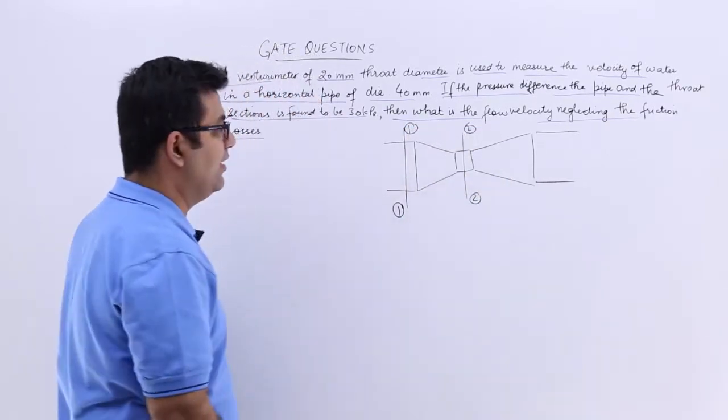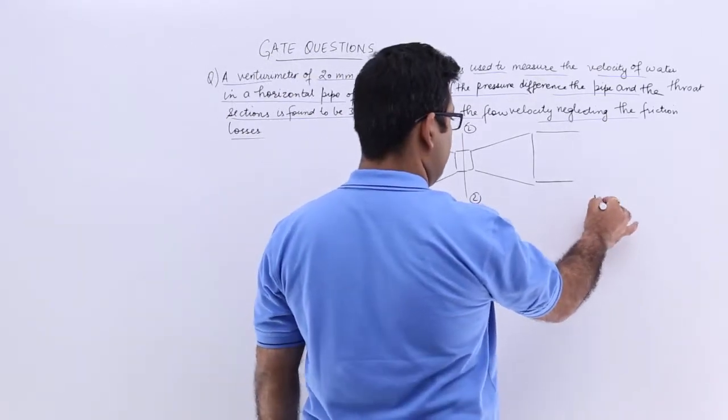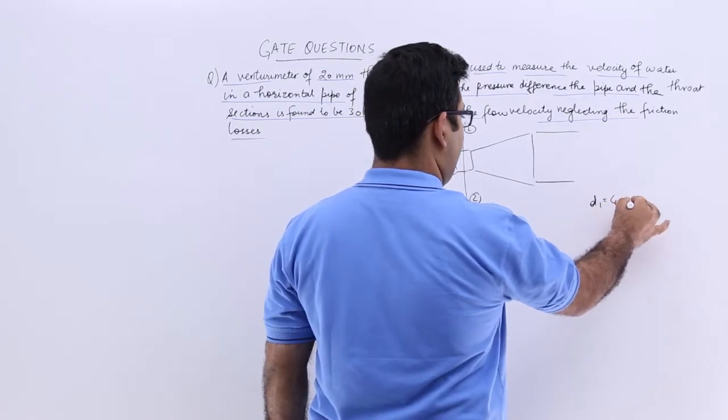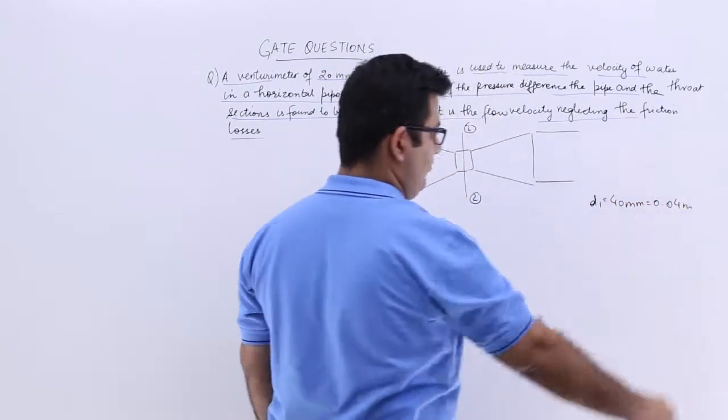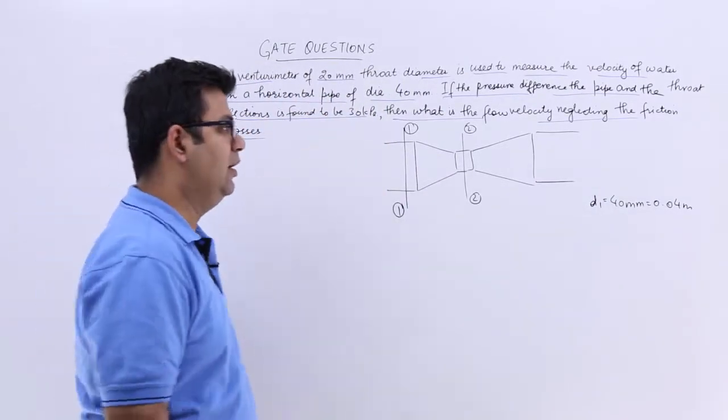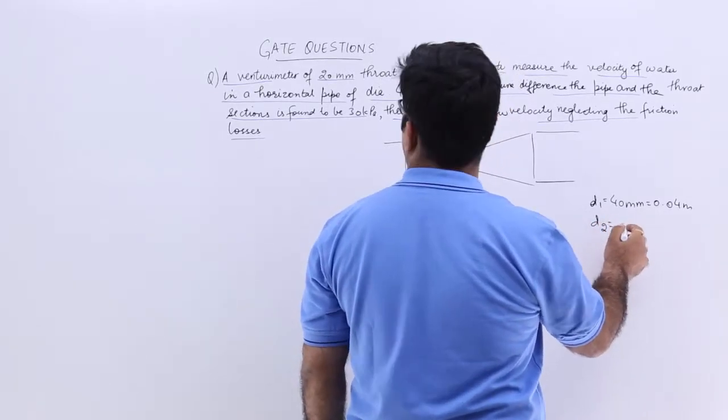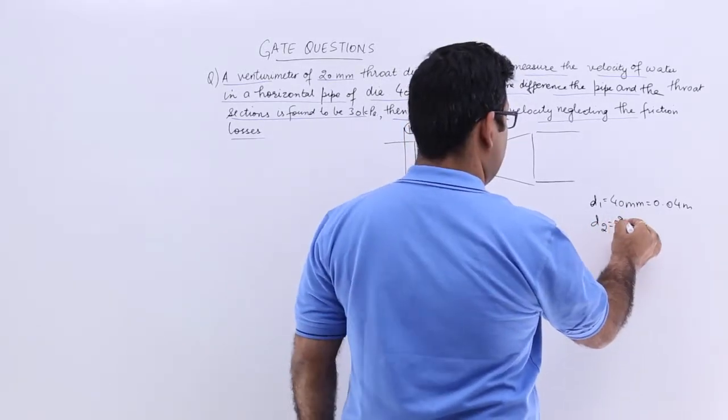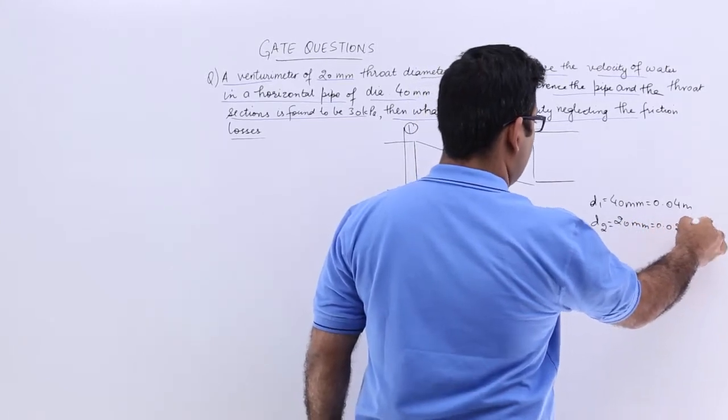D1 is the pipe diameter which is 40 mm, so D1 is 40 mm which is 0.04 meters. D2 is the throat diameter, so throat diameter is 20 mm, so that comes out to be 0.02 meters.